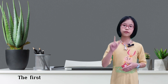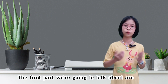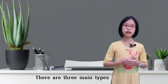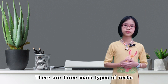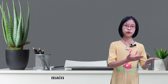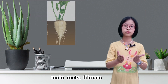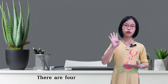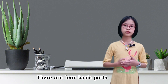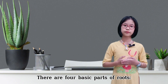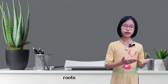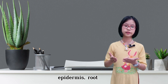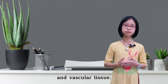The first part we're going to talk about are roots. There are three main types of roots: main root, fibrous root, and aerial root. There are four basic parts of roots: root hair, root epidermis, root cap, and vascular tissue.